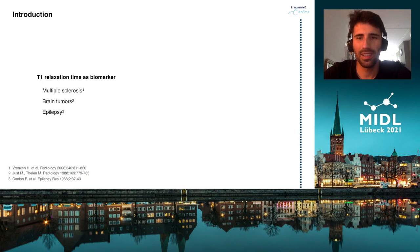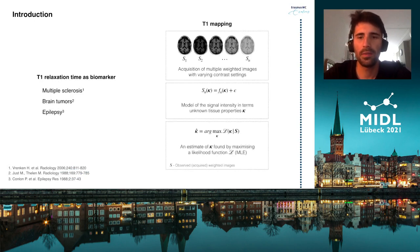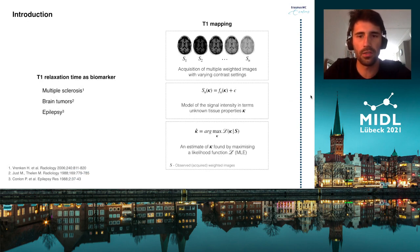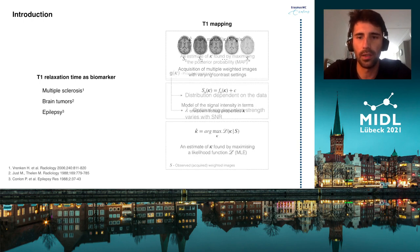T1 relaxation time is a promising biomarker for a range of diseases. Conventionally, T1 maps are estimated by fitting a known signal model to a series of weighted images with different contrast settings. This inverse problem, however, is usually ill-conditioned and errors might be amplified by the presence of acquisition noise.